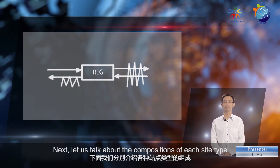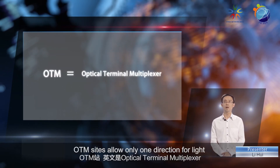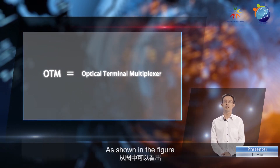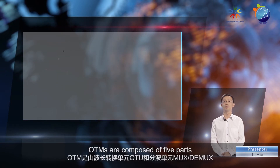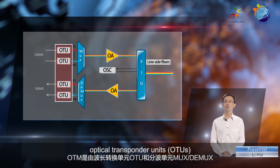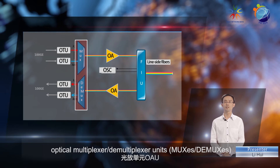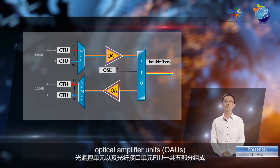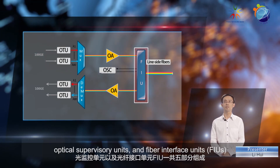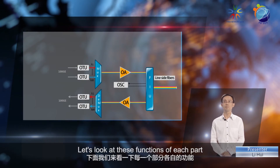Next let's talk about the compositions of each site type. OTM sites allow only one direction for light, meaning that all optical signals terminate here. As shown in the figure, OTMs are composed of five parts: optical transponder units, optical multiplexer or demultiplexer units, optical amplifier units, optical supervisory units, and fiber interface units.